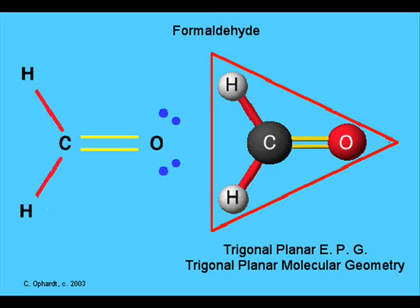Trigonal planar is the next one we're going to be talking about. Here, you're going to have three atoms surrounding the central atom. So basically, it looks like a triangle in a flat form.